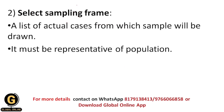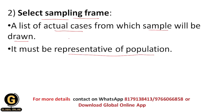The second step is to select the sampling frame. A sampling frame is a list of actual cases from which the sample will be drawn, and it must be representative of the population. Whatever population it is, we select the sample from that population. The actual population from which we are selecting the sample is called the sampling frame.